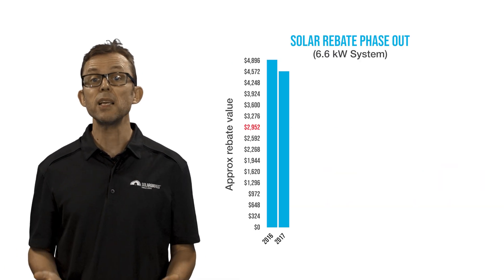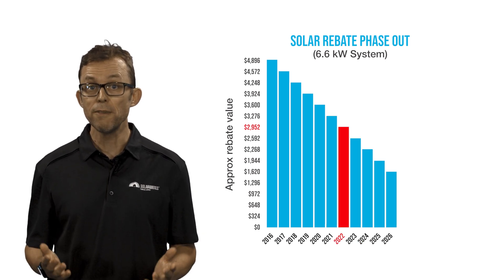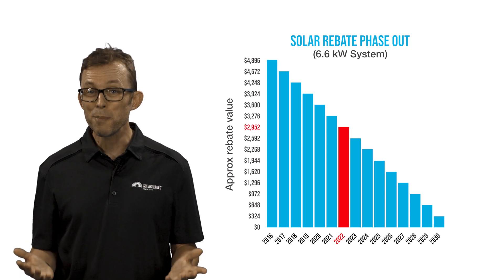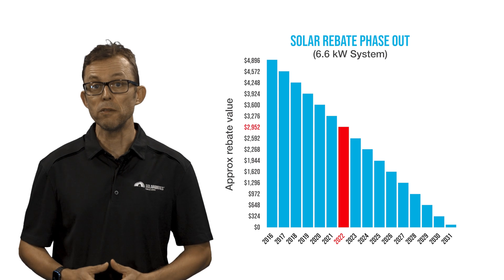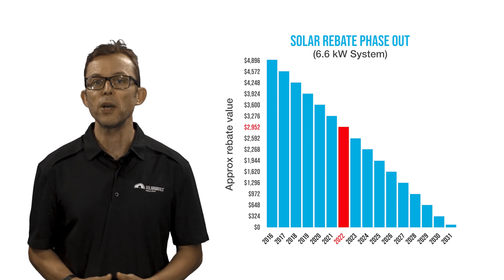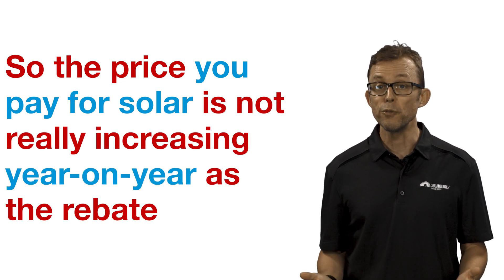The STC scheme is designed to be phased out, ending in 2030. So on January 1st, the value of the rebate dropped by around 10%. But the good news is the falling cost of solar panels and inverters is generally keeping up with the annual rebate reduction. So the price you pay for solar is not really increasing year on year as the rebate reduces.